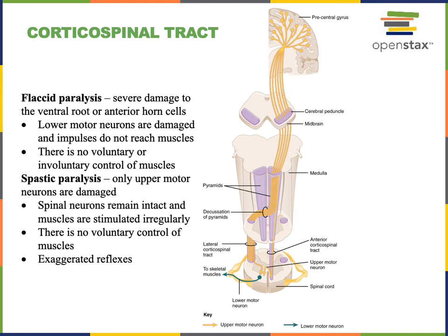The upper motor neuron's axon extends down through the white matter of the cerebrum, through the cerebral peduncles of the midbrain, and then through the pyramids of the medulla oblongata.